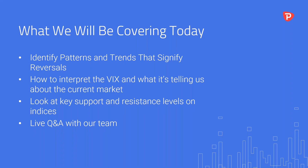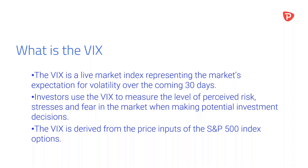Tonight we're covering: identifying patterns and trends that signify reversals, how to interpret the VIX and what it's telling us about the current market situation. When the VIX hits over that 20 to 25 mark you should be changing your investment style. We'll also be looking at key support and resistance levels on indices — specifically monthly and weekly levels — and we'll look at the massive stimulus packages coming in from the US, the two trillion dollar stimulus, and then see where the market could go next.